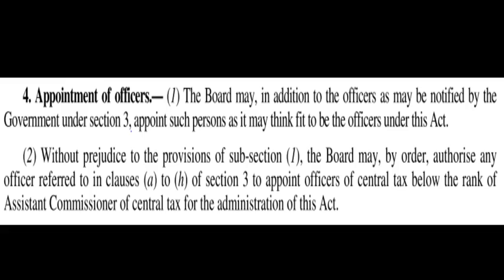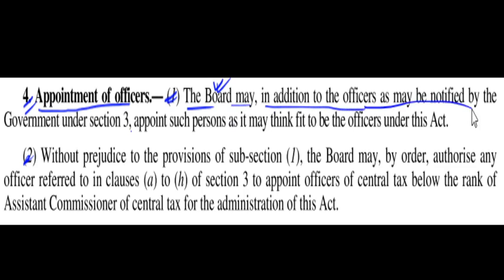Today we shall discuss the board's power to appoint officers as per the CGST Act, provided in Section 4 — 'Appointment of Officers'. Section 4 has two subsections. Subsection 1 states that the Board — meaning the Central Board of Indirect Tax and Customs — may, in addition to the officers notified by the government under Section 3, appoint officers as it thinks fit.